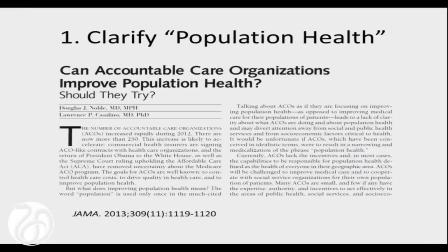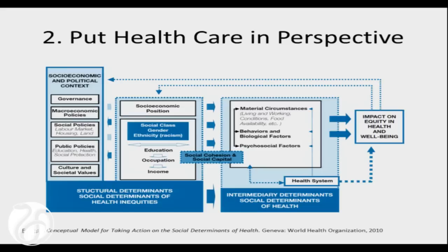Trying to move the zeitgeist about what population health means is an important goal for the roundtable to start with. Second, we need to counter the gravitational pull in our country around health care. I often show the WHO model of the determinants of health. I tell doctors and colleagues in hospitals this is where they work — the health system is over here — and yes it does have some impact on health, but we should have some humility about what the larger forces driving our health outcomes are. If we're really serious about improving population health, how can we think the strategy is to pour all of our resources into that little box? But that is in effect what we're doing.